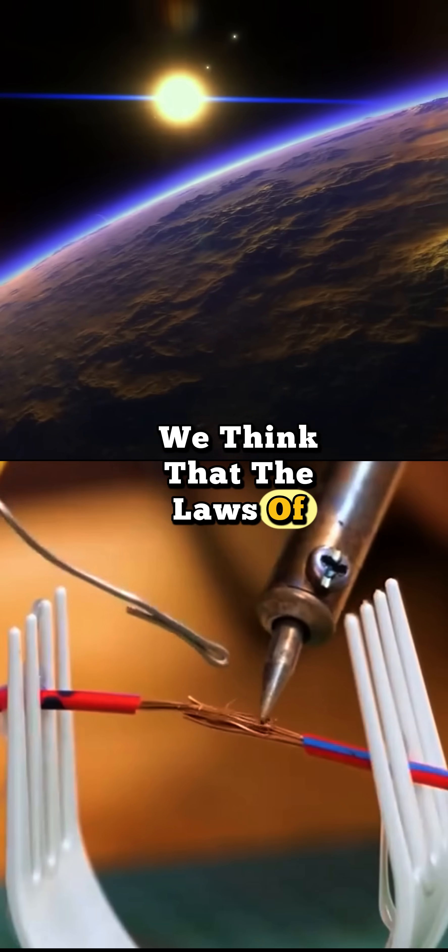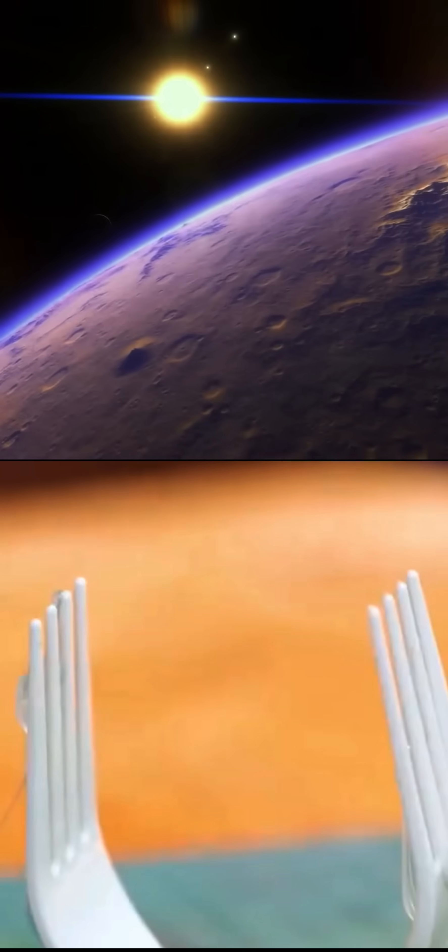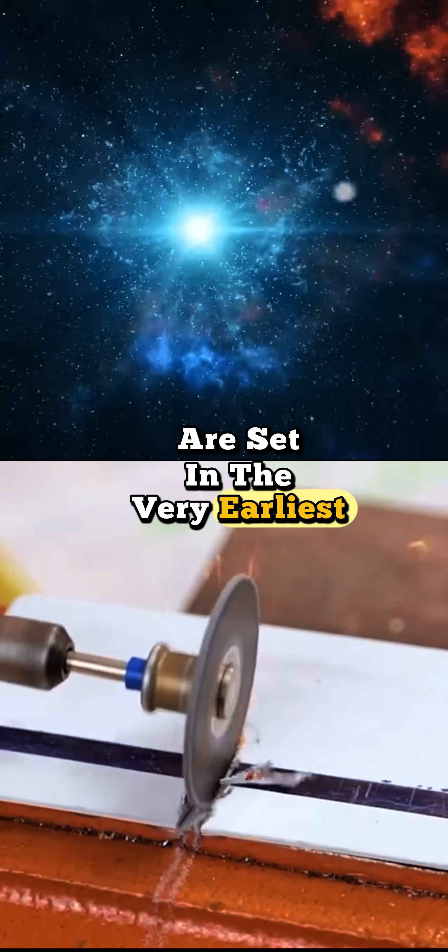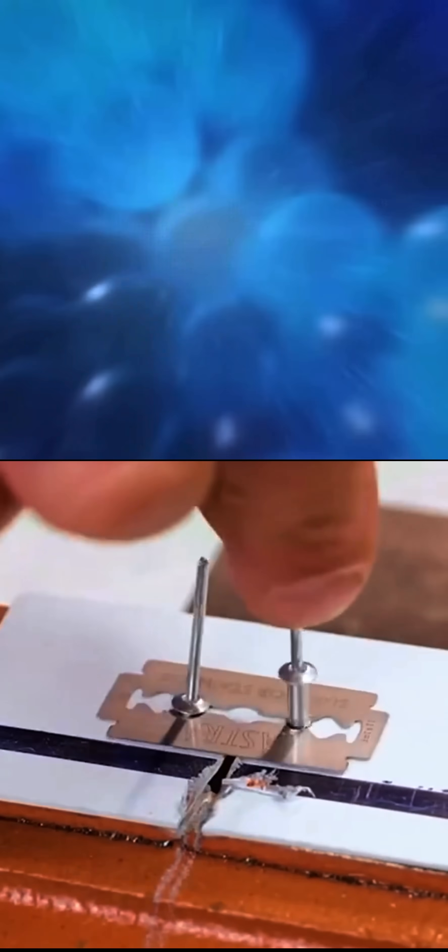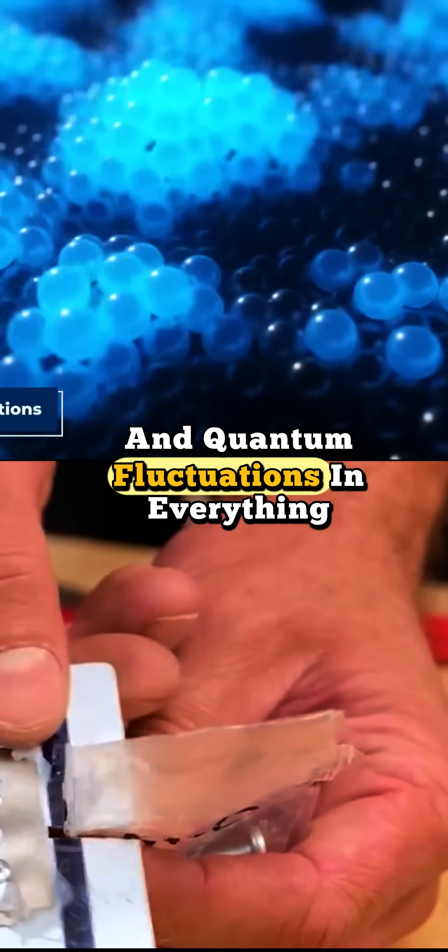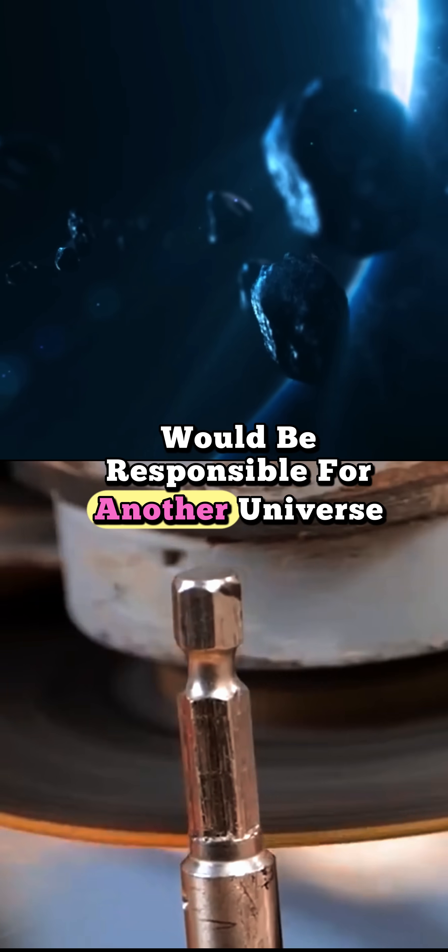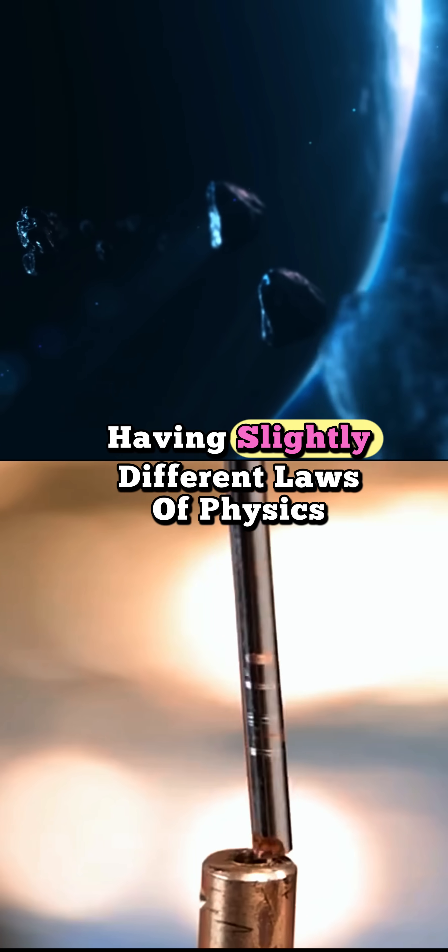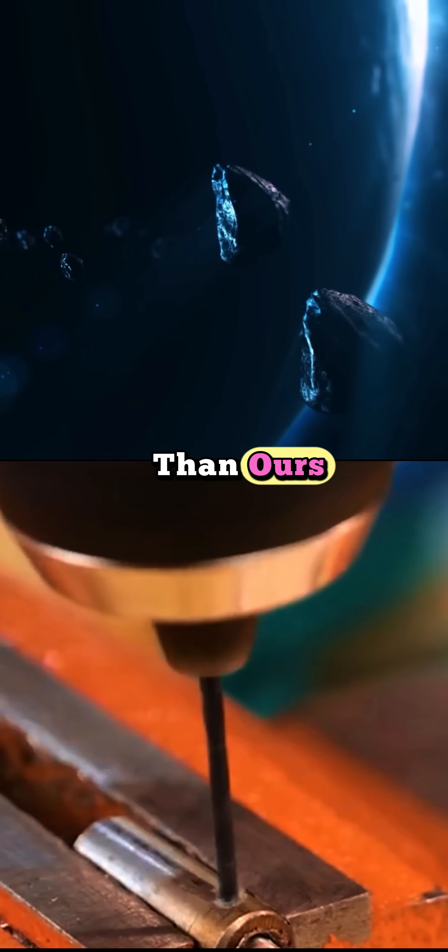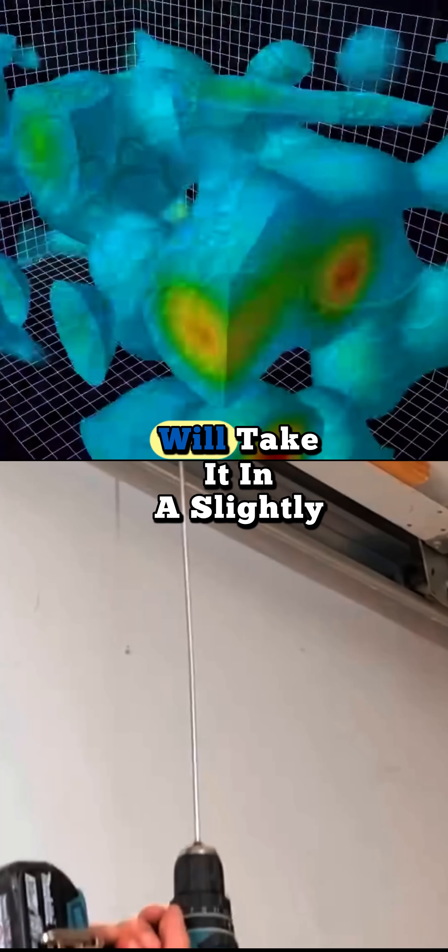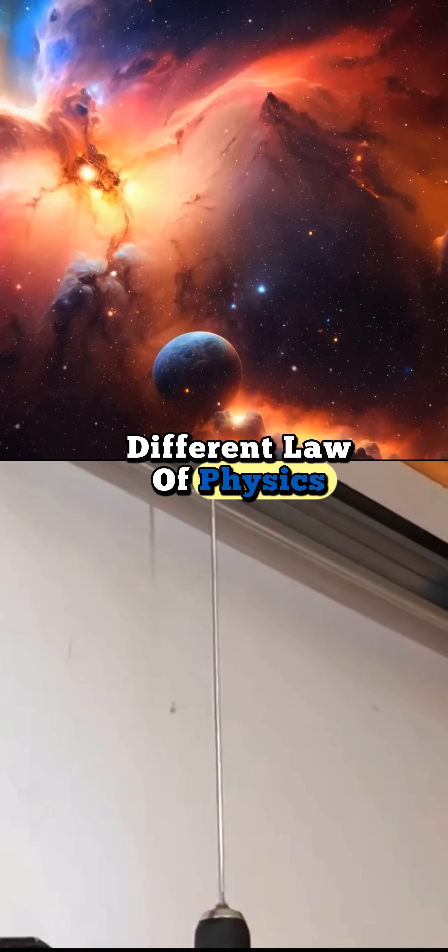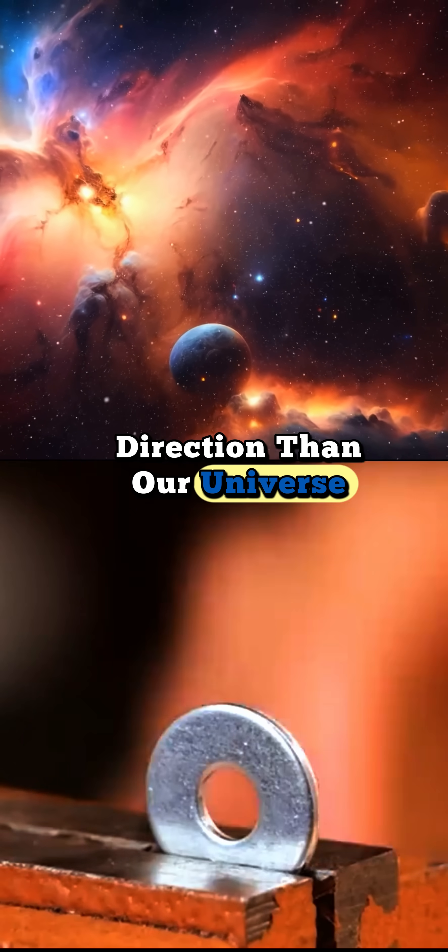We think that the laws of physics as we experience them are set in the very earliest stages of the universe. And quantum fluctuations in everything would be responsible for another universe having slightly different laws of physics than ours. Because the quantum fluctuations will take it in a slightly different law of physics direction than our universe.